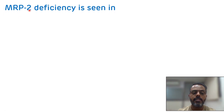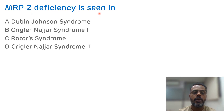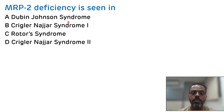Today's MCQ is: multi-drug resistance protein 2 deficiency is seen in — and the options are Dubin-Johnson syndrome, Crigler-Najjar syndrome type 1, Rotor syndrome, and Crigler-Najjar syndrome type 2.